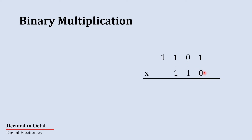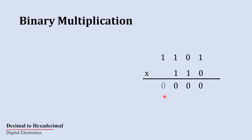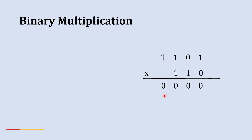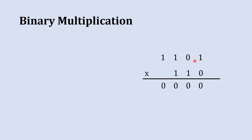When you multiply this 0 with 1 the result is 0; 0 with 0 is 0; 0 with 1 is 0; and 0 with 1 is 0. So it is clear that when we multiply 0 with any number the answer will be 0 only. If the number is 4 bits like this one, then we should directly place four zeros here.